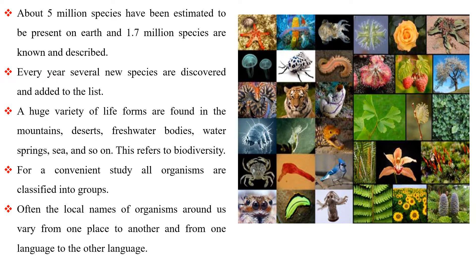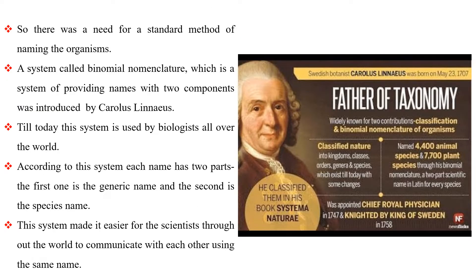For a convenient study, all organisms are classified into groups. Often, the local names of organisms around us vary from one place to another and from one language to another. So, there was a need for a standard method of naming the organisms. A system called binomial nomenclature, which is a system of providing names with two components, was introduced by Carolus Linnaeus.